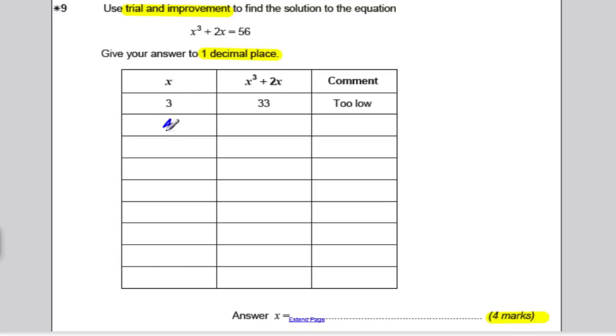If you, on your calculator, work out 4 cubed plus 2 times 4, you would get 72, and that's too high. So, we've found our too high and too low.